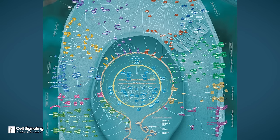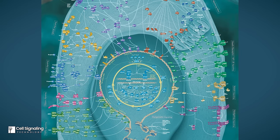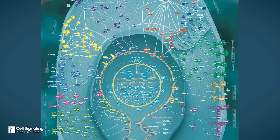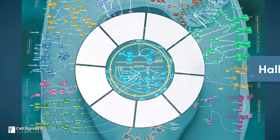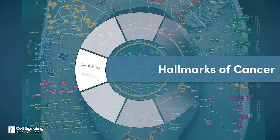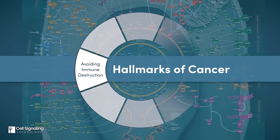In the Hallmarks of Cancer, Hanahan and Weinberg sought to organize the complexity of cancer biology by breaking it down into 10 fundamental principles.